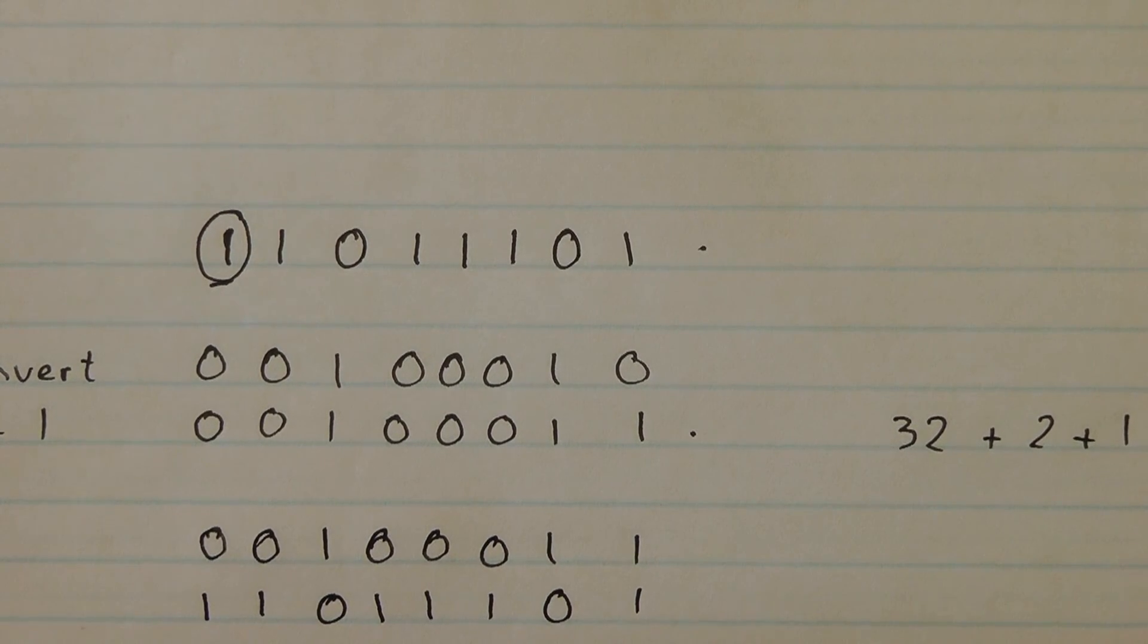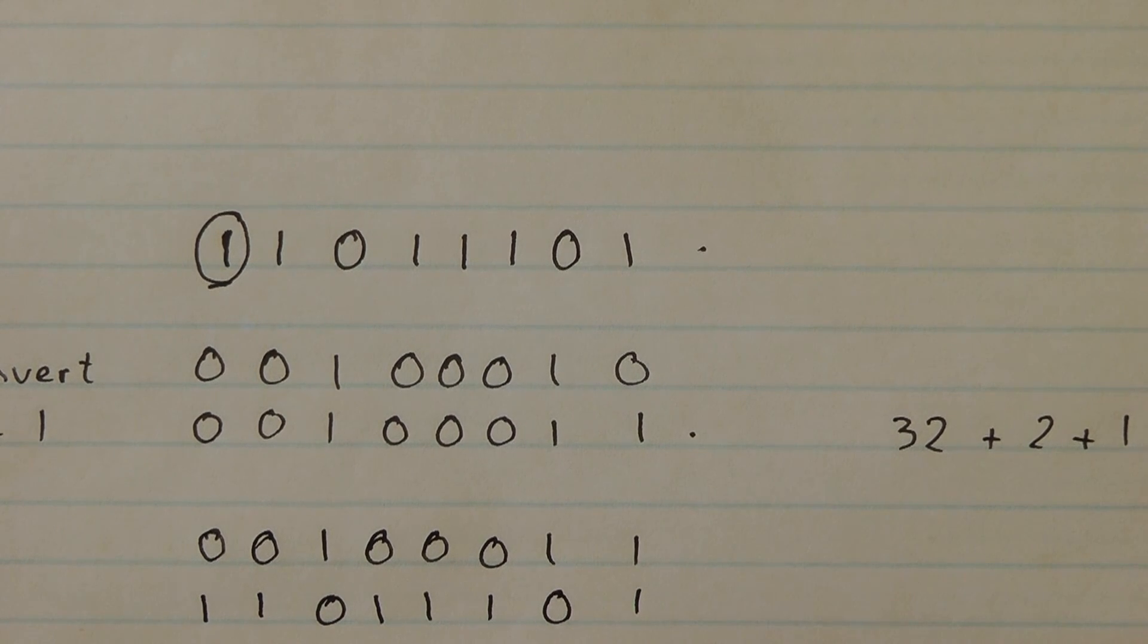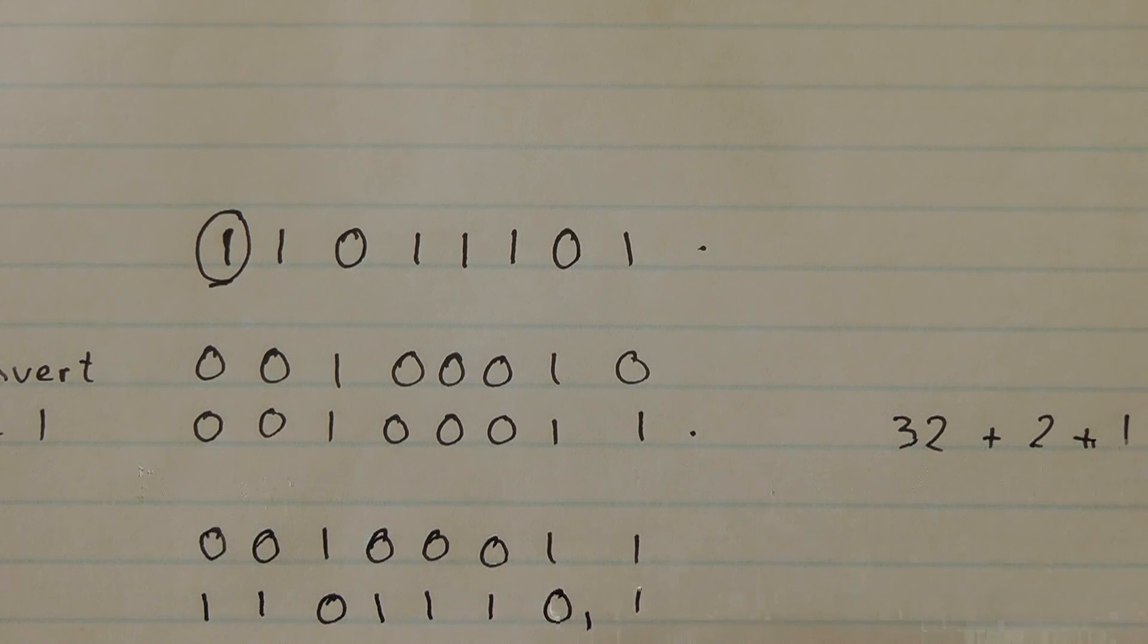And if I add them: 1 and 1, 0, carry 1. 1 and 1, 0, carry 1. And it keeps going all the way until the carry falls in the overflow register.